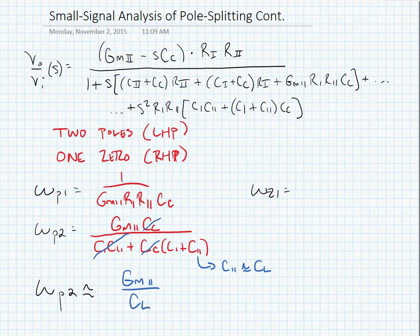And our zero is given by GM2 over s minus CC. Now we can see that this zero comes from that Miller capacitance, and that feed forward path across an amplifier stage always creates a right half plane zero, so we can see that very clearly here.